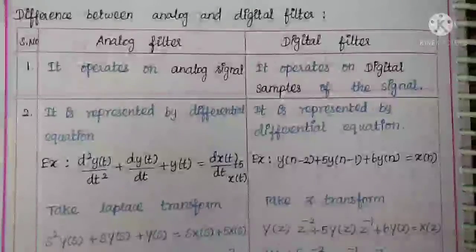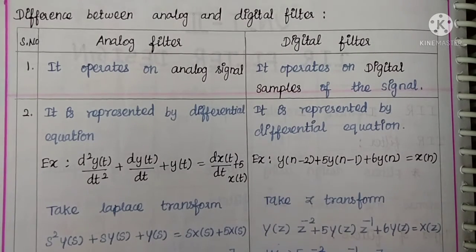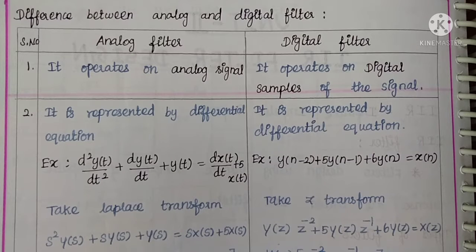Welcome to the GGS Knowledge and Learning Channel. In this video we will see the difference between analog and digital filters. We will draw a tabular column with the first column as analog filter and the second column as digital filter. The first point is: analog filter operates on analog signals.